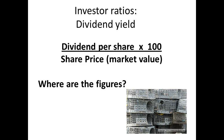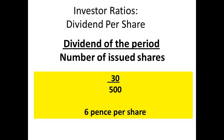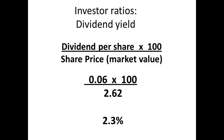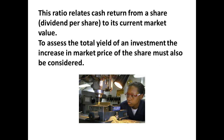The dividend yield is the dividend per share divided by the share price at market value. The dividend per share is £0.06 and the market value per share is £2.62. So, 0.06 divided by 2.62, then multiplied by 100 to give a percentage, equals 2.3%. This relates the cash return to the current market value of the share. The total yield would also consider any increase in the market value of a share.